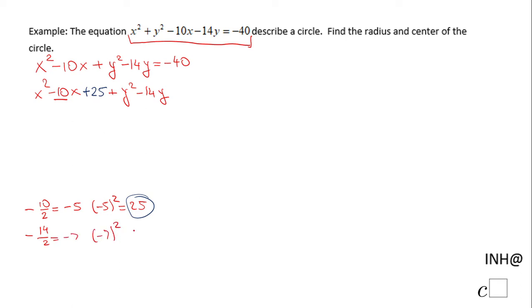And we're gonna get positive 49. This positive 49 is the number we need to complete the square. And then we have equals negative 40. However, if you notice, we added the 25 and the 49 on the left side.